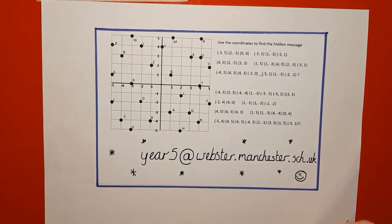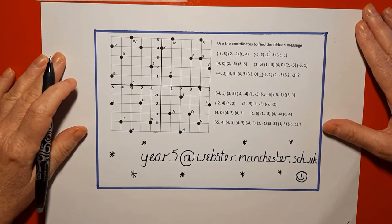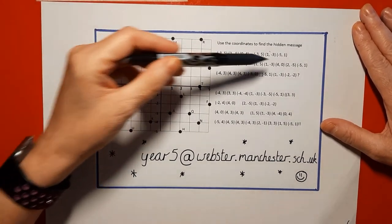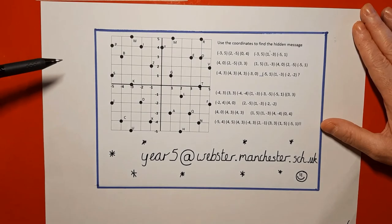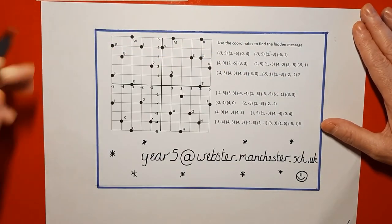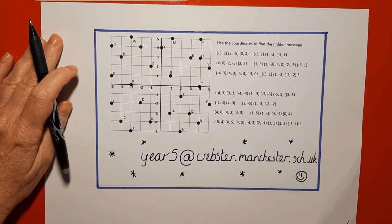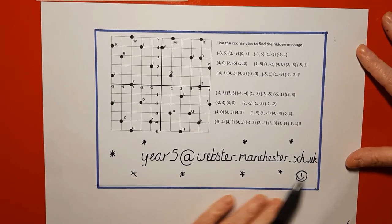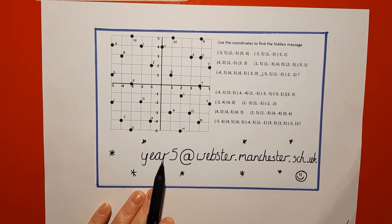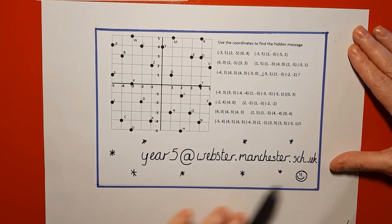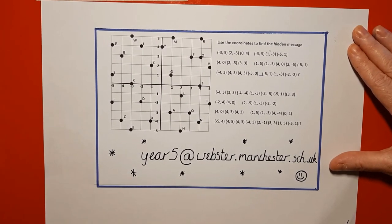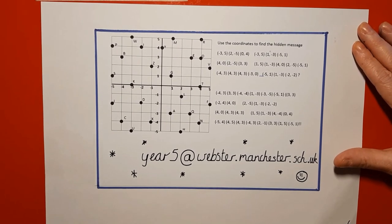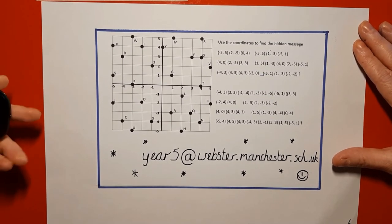The last activity is a fun one where you decode a hidden message — find whichever letter is at each set of coordinates and write it down to reveal the message. If you have any questions, I've included the Year 5 email address — just email that address and somebody from the Year 5 team will get back to you. Hope that's helpful. Take care.